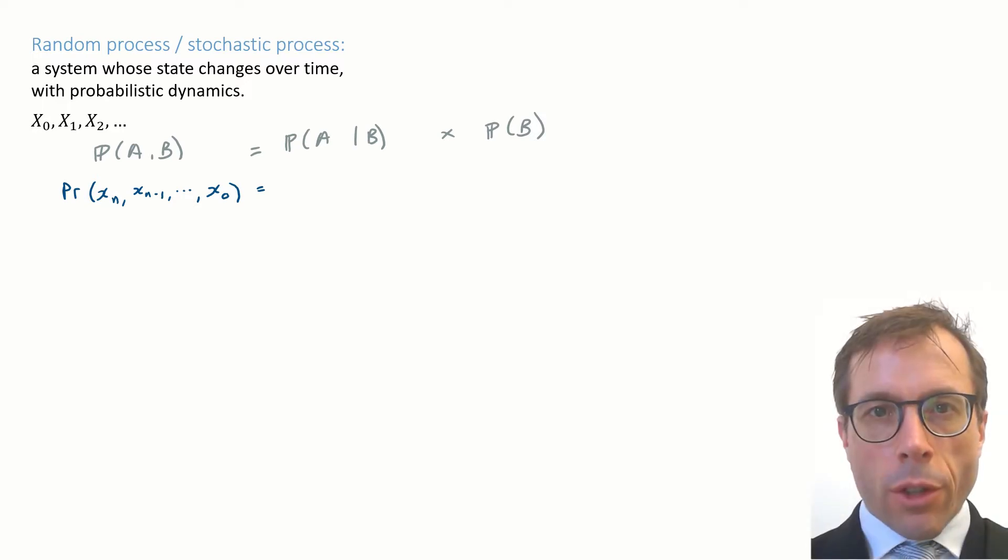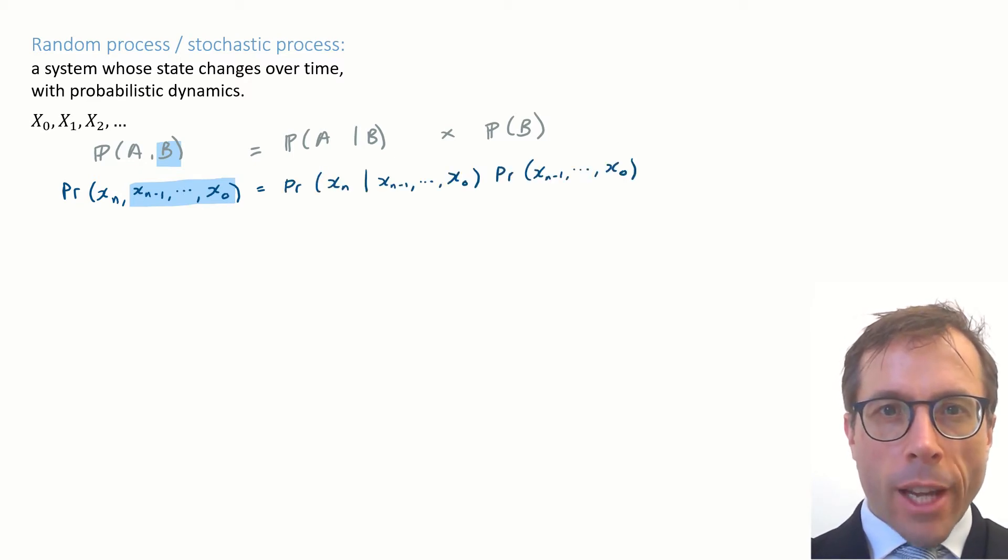This is the definition of conditional probability and here's how we'll use it. We'll take b to be the entire sequence xn minus 1 down to x0. And it gives us this expression here, one factor involving xn, the other factor only involving earlier time points in the data set.